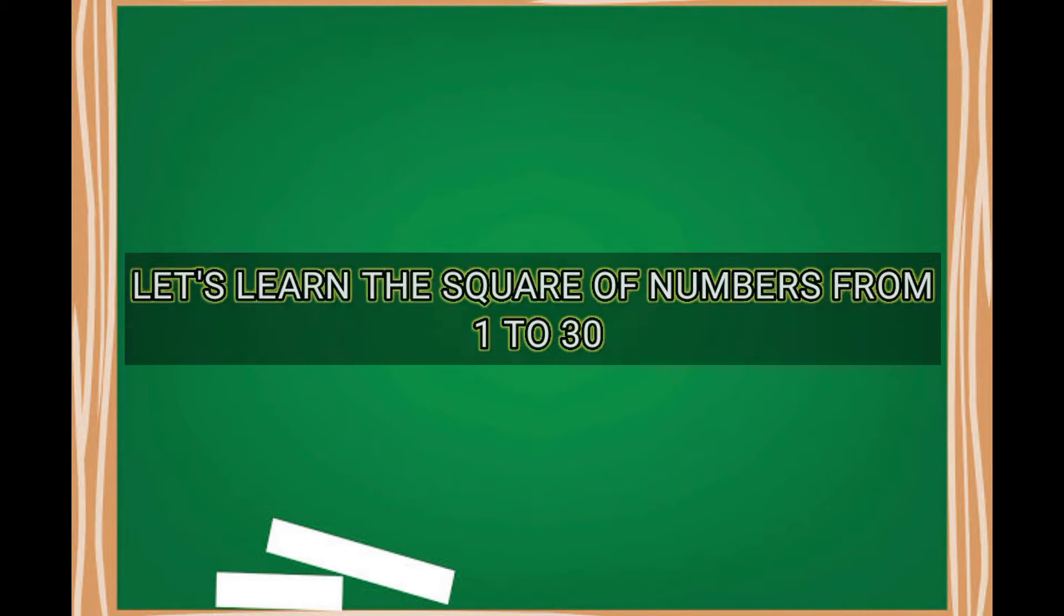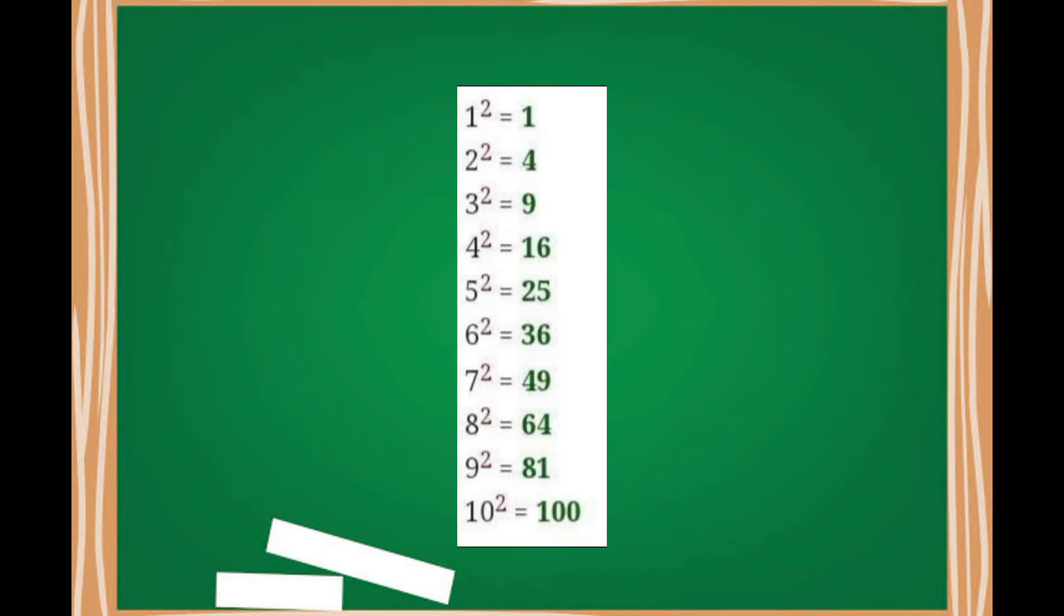Now let's learn the square of numbers from 1 to 30. 1 square 1, 2 square 4, 3 square 9, 4 square 16, 5 square 25, 6 square 36, 7 square 49, 8 square 64, 9 square 81, 10 square 100.